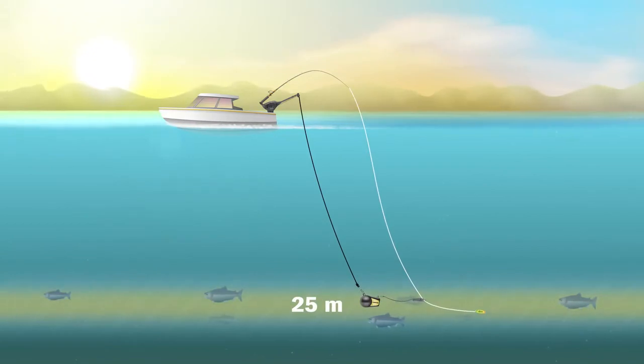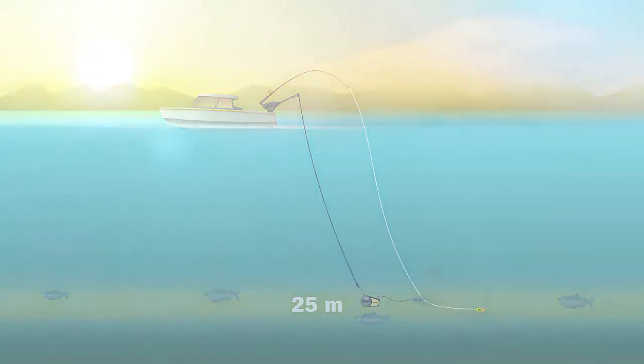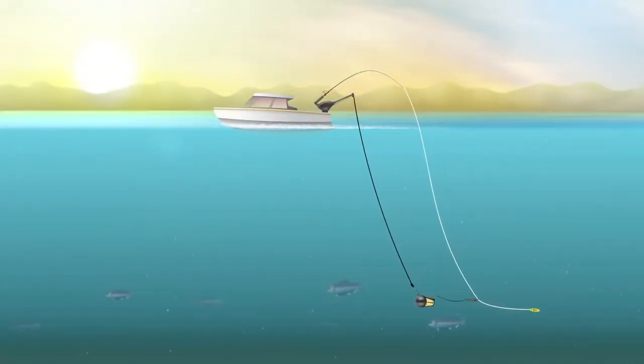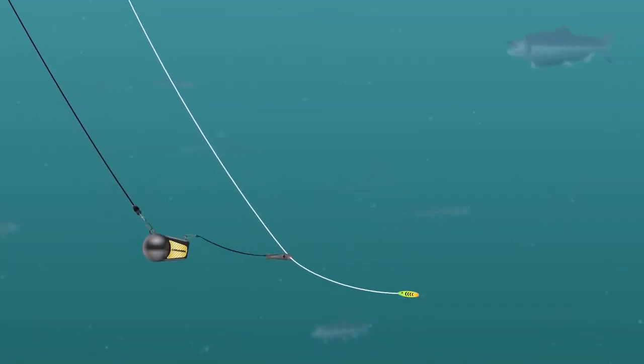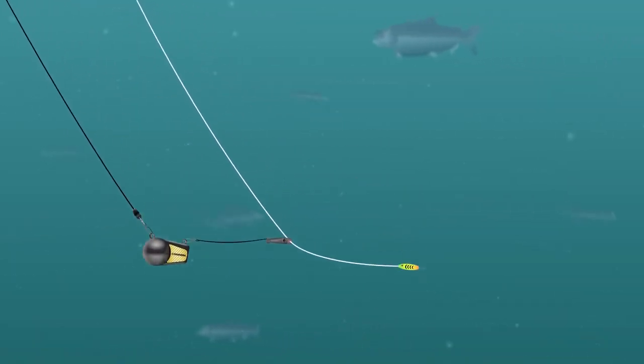While you're trolling, the downrigger keeps your lure at that depth and allows it to move naturally through the water. On some Cannon downriggers, you can cycle the weight up and down to cover more area or keep it at a set distance from the bottom for suspended fish.